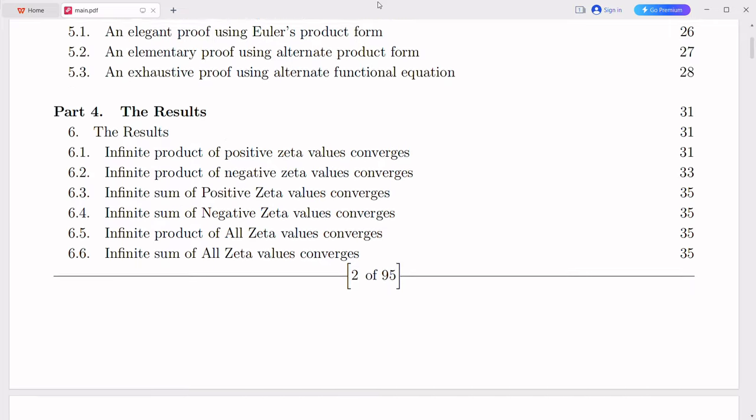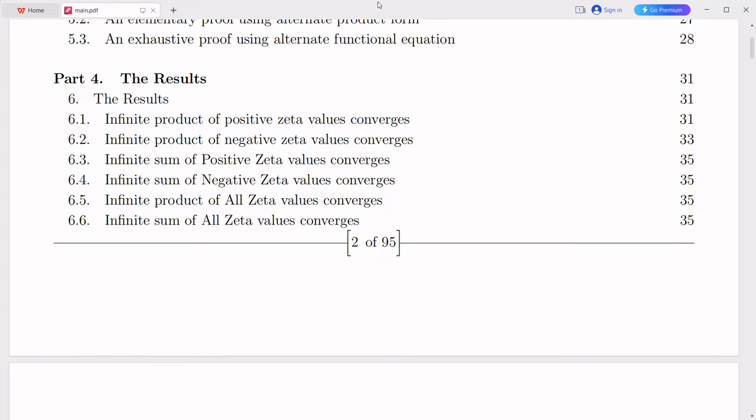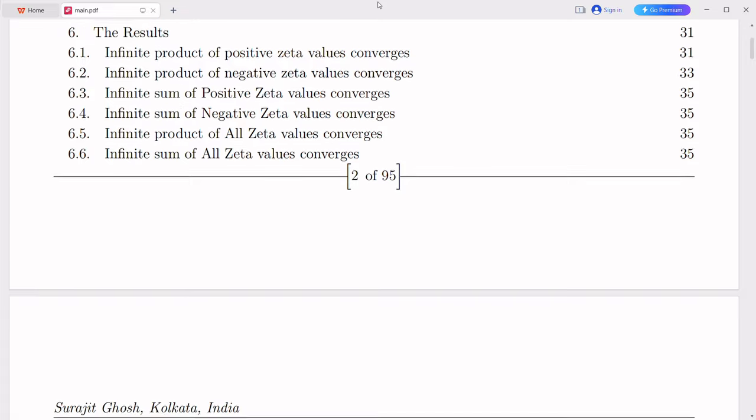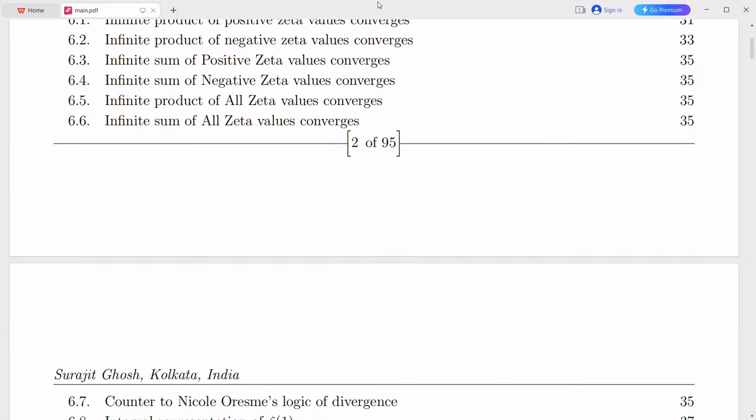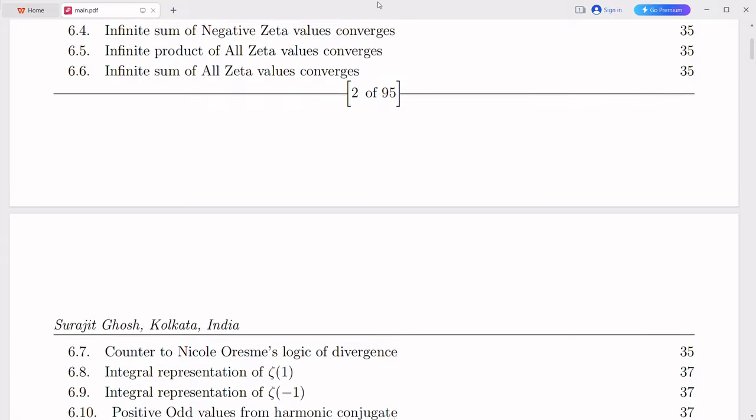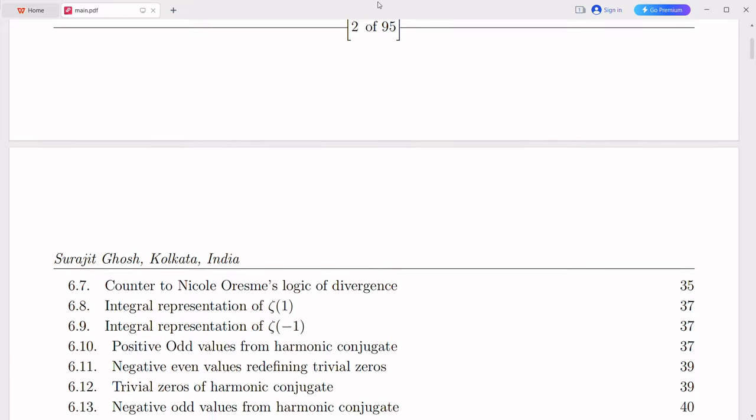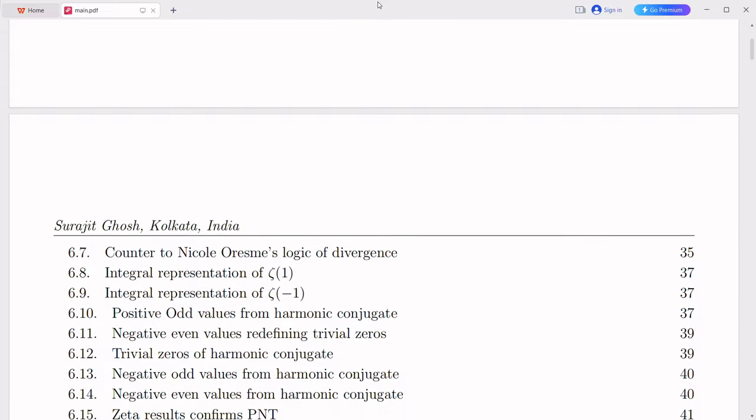To broaden the domain of the Riemann zeta function, we generally employ a technique known as analytic continuation. Analytic continuation enables us to extend the definition of a function to a larger domain. In the case of the zeta function, we can extend it to the entire complex plane, excluding the point s equals 1, where it possesses a simple pole.